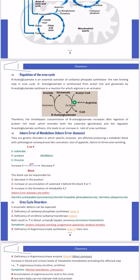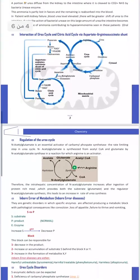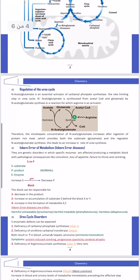خطوات الخمسة من دورة اليوريا يتم تنظيمها عن طريق هذه الإنزيمات. التفاعل الأول يتم تنظيمه عن طريق إنزيم carbamyl-phosphate synthase، ولكن هذا الإنزيم يحتاج إلى مركبات أخرى تسمى N-acetyl glutamate، والتي تعتبر essential activator of carbamyl-phosphate synthase. هذه المركبات ناتجة من اتحاد acetyl-CoA مع glutamate بوجود إنزيم N-acetyl glutamate synthase، بوجود الأرغينين كمحفز لهذا التفاعل.